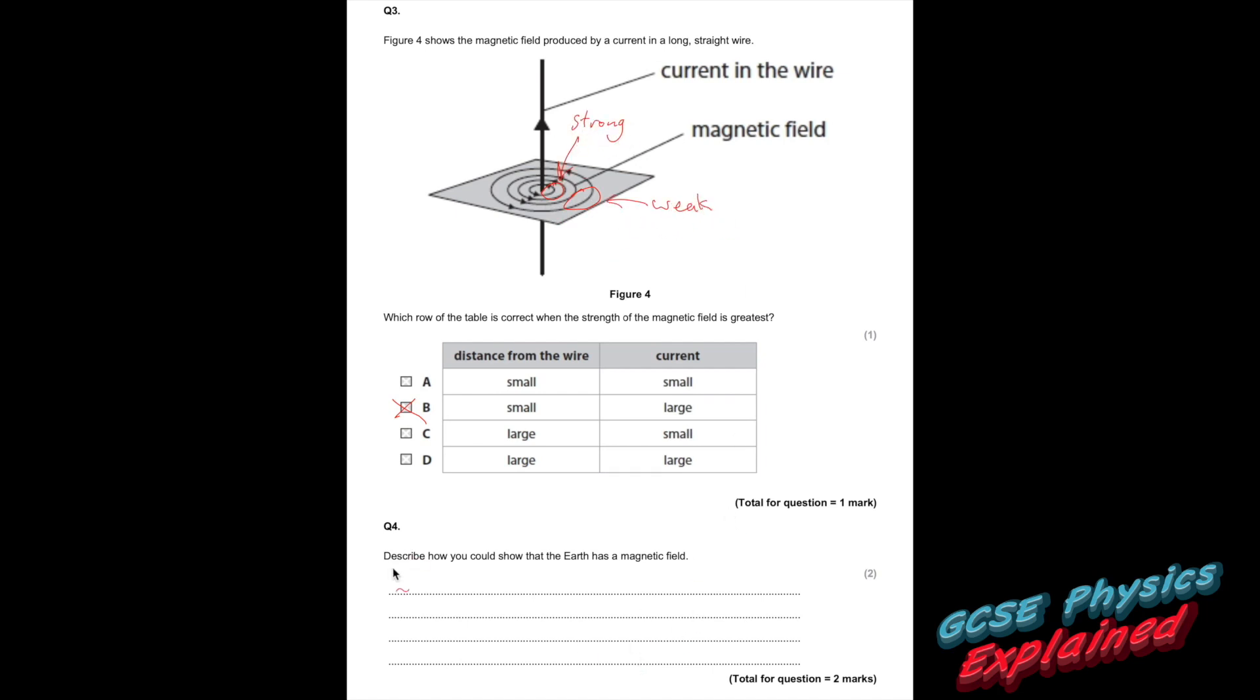Part 4. Describe how you could show that the Earth has a magnetic field. Two marks. Well, you would just use a compass, and the compass will point north. And that's because it lines up with the Earth's magnetic field, and that proves that the Earth has a magnetic field.